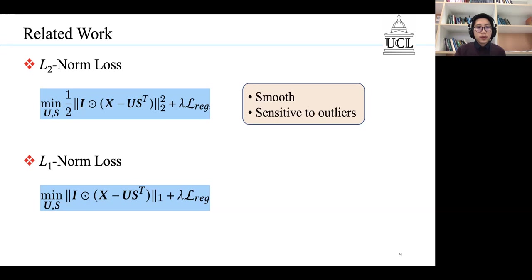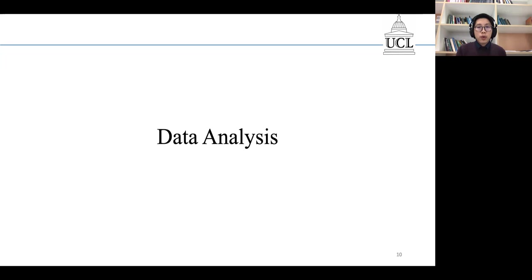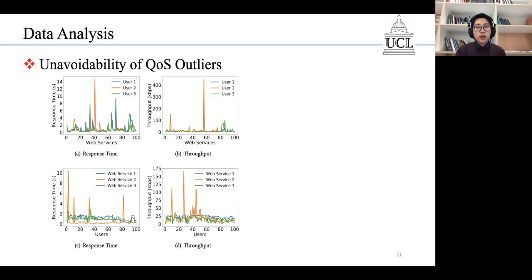Besides, L1 loss is still sensitive to outliers. To show that it is really important to take the outliers into consideration, we conduct a data analysis on WS-DREAM, which is a public QoS dataset.